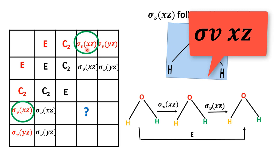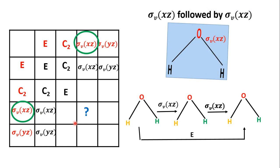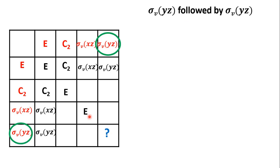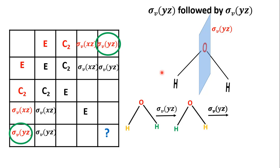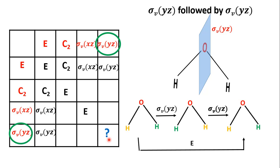σVyz is the plane passing through the oxygen atom, perpendicular to the molecular plane, bisecting the two OH bonds. During reflection, the two hydrogen atoms are interchanged. If we do σVyz, yellow comes to the right and green goes to the left. If we do σVyz again, the original arrangement is restored. So σVyz followed by σVyz gives E.